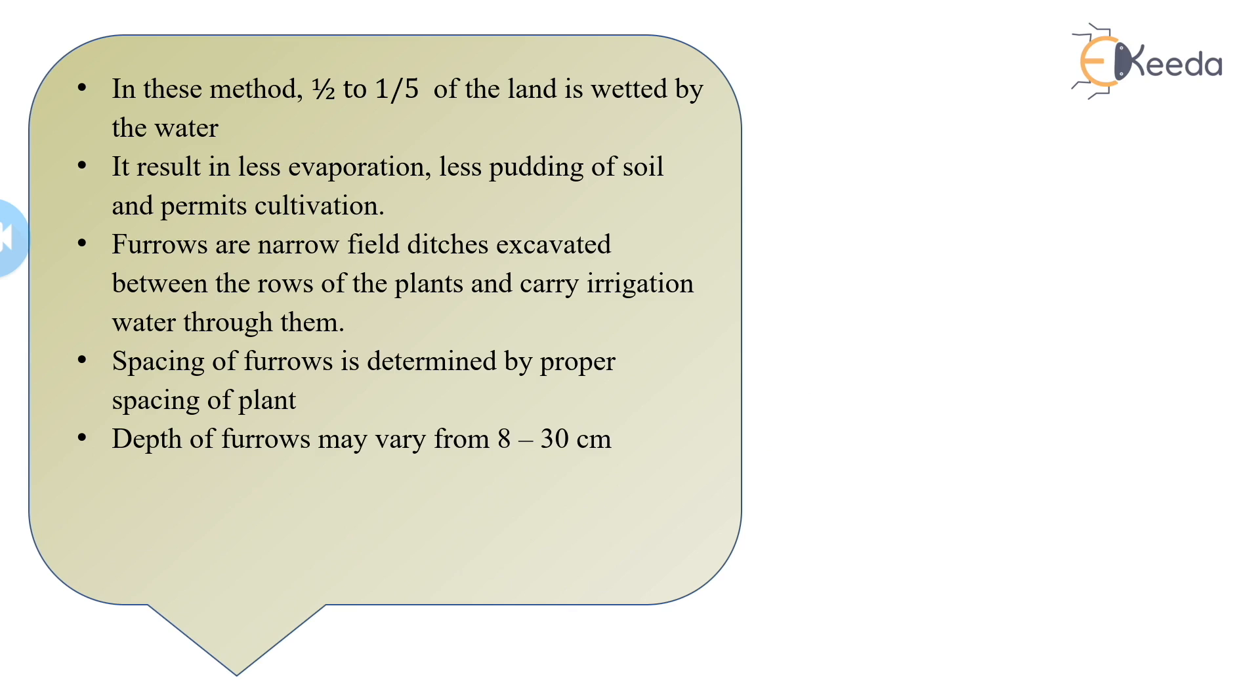Furrow spacing for corn, potatoes, sugarcane, and other row crops is determined by the proper spacing of plant rows, one irrigation furrow being provided for each row in such circumstances. The spacing of furrows is kept from 1 to 2 meters in orchard irrigation.